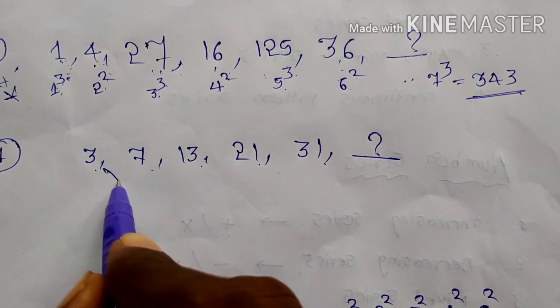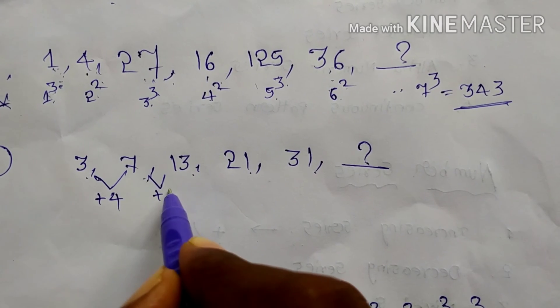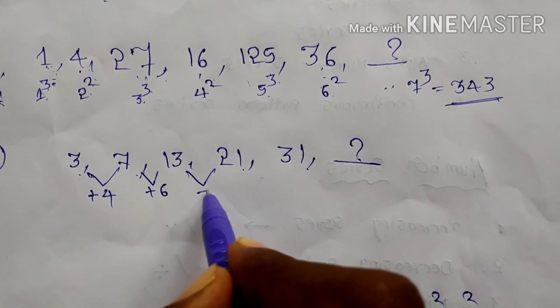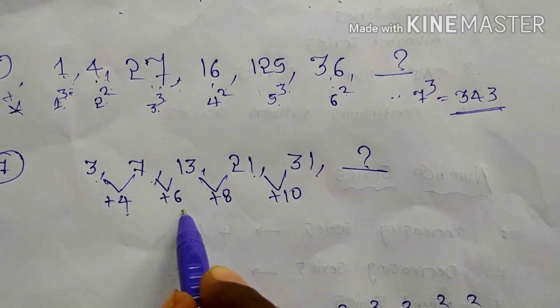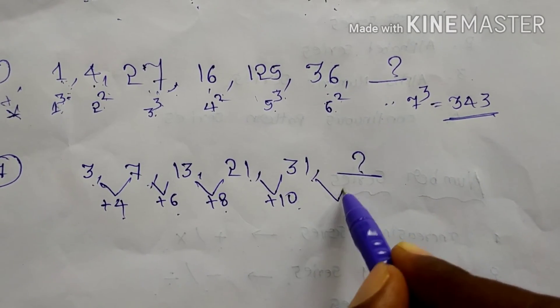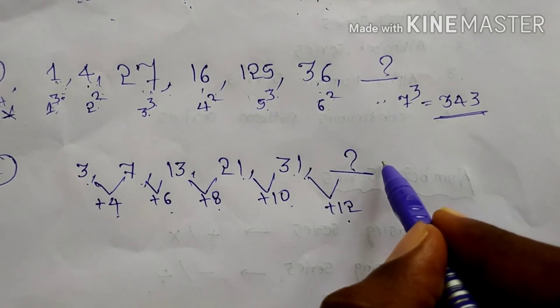Once you can observe the pattern which follows here. 3 plus 4, 7. 7 plus 6, 13. 13 plus 8. 21 plus 10. 4, 6, 8, 10. Next number will come. Plus 12. That means 31 plus 12 you will get 43 is your answer.